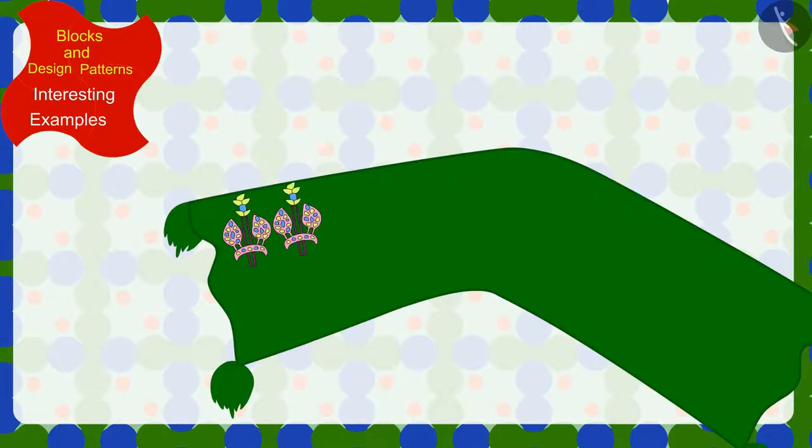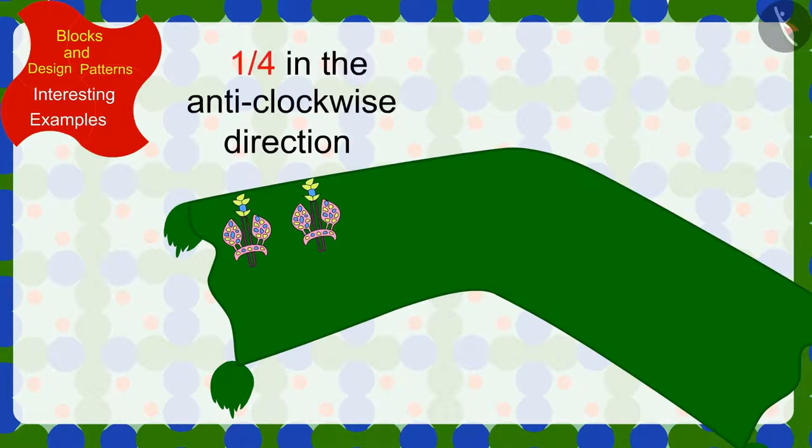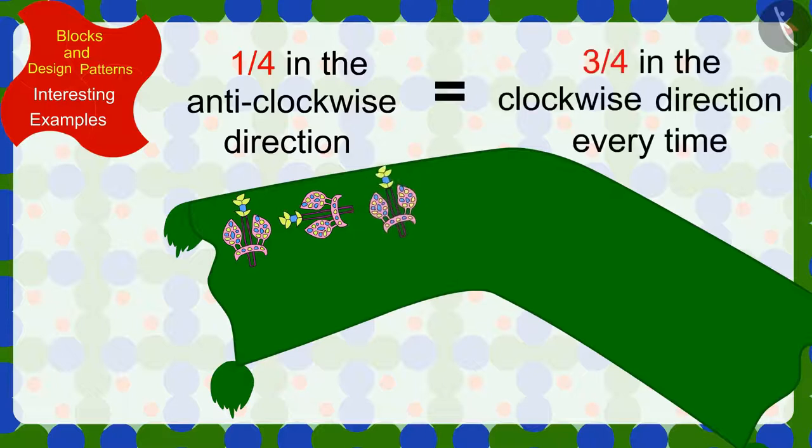And in the pattern made on the dupatta, the design is being rotated by a quarter in the anti-clockwise direction or three-fourth in the clockwise direction every time.